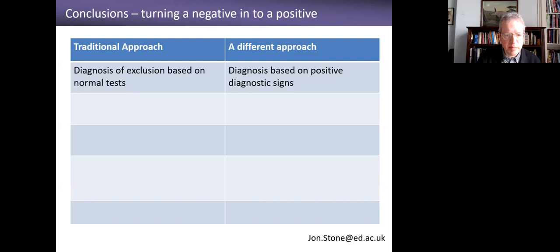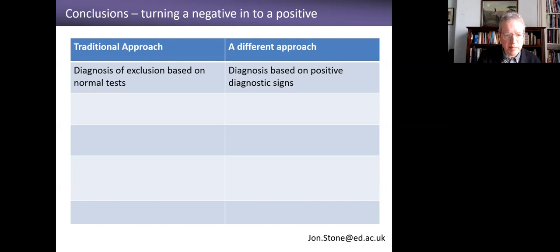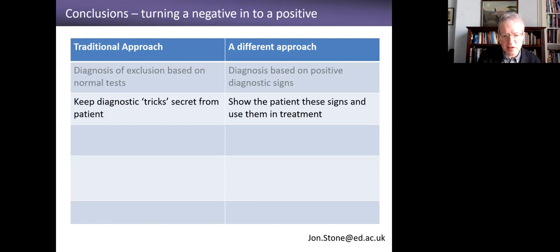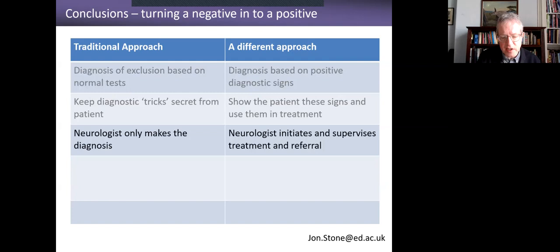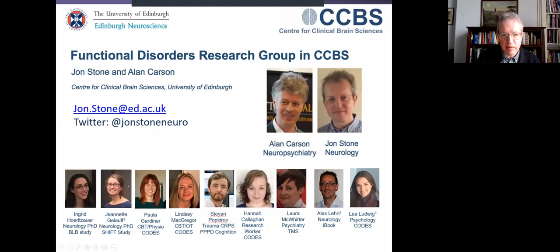I've run out of time. In summary: FND is a positive diagnosis, not one of exclusion. We can share these positive signs with patients and use them in treatment. The neurologist is incredibly important in initiating and supervising treatment and referral. Our models are much broader than before — not just psychological, there's a whole range of potential mechanisms. And the treatment is also multidisciplinary.